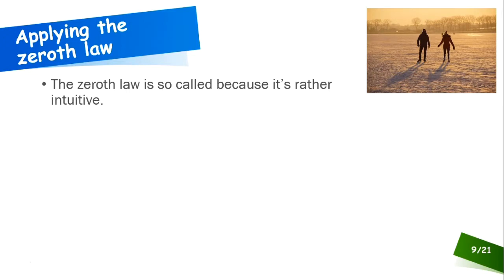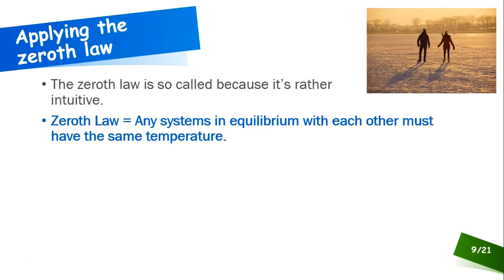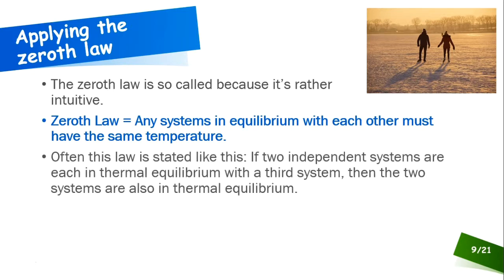Let's look at each law individually, starting with the unofficial zeroth law. It's called the zeroth law because it's really intuitive. The zeroth law says any systems in equilibrium with each other must have the same temperature. If two independent systems are each in thermal equilibrium with a third system, then those two systems are also in thermal equilibrium with each other.